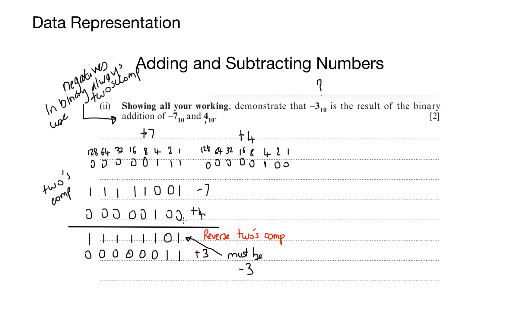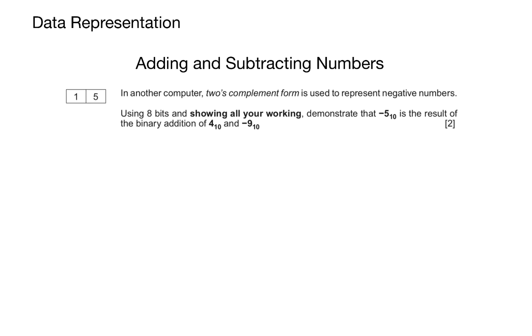Now, in every question, you need always to reverse the final answer when you're doing binary subtraction. In this question, it does specify that we're using 8 bits, and we're trying to show that minus 5 is the result of the binary addition of 4 and minus 9. So, the first thing I do is demonstrate what positive 4 is, and then I'll demonstrate what positive 9 is. Once I've completed that, I will apply two's complement to show negative 9.